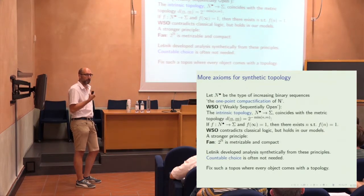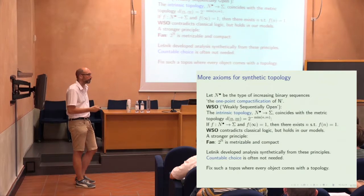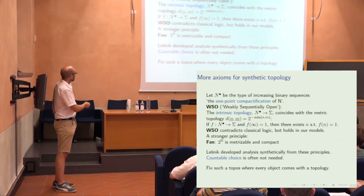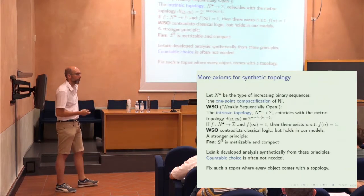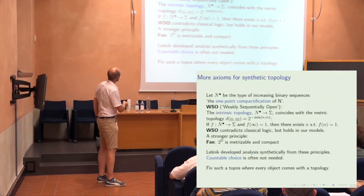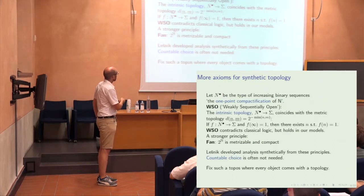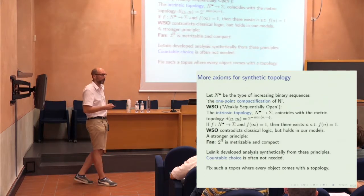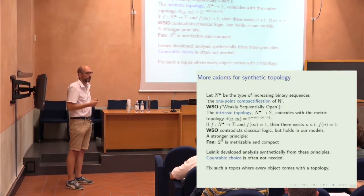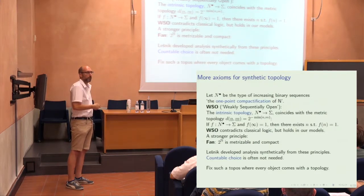We'll fix such a topos — either a realizability topos or one of the big toposes on the topological side — and develop the theory of valuations inside this setting. What we need is to code up the real numbers in the correct way, to have the real numbers with the correct topology, connecting the topology of the real numbers with the topology you get from the synthetic topology.